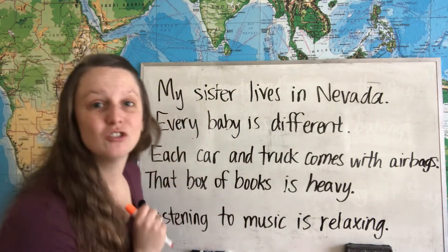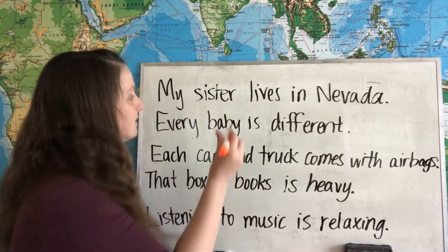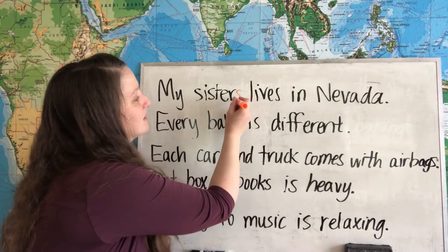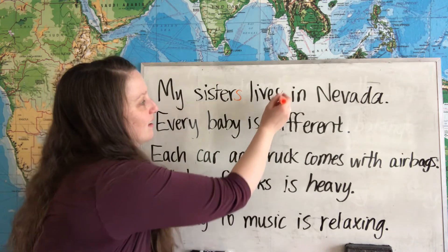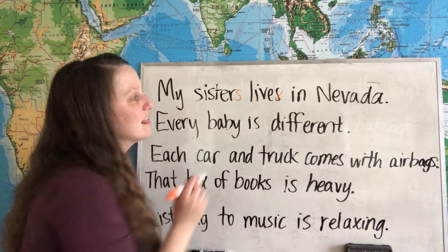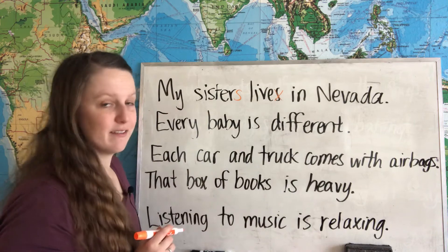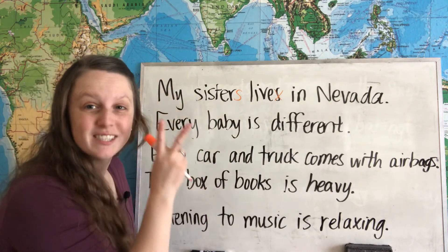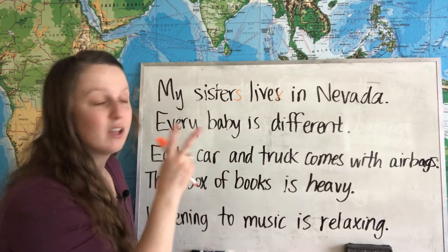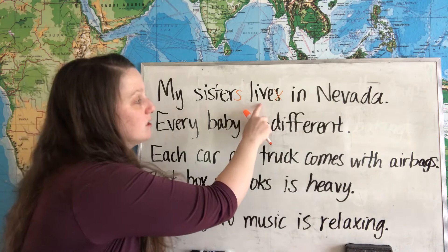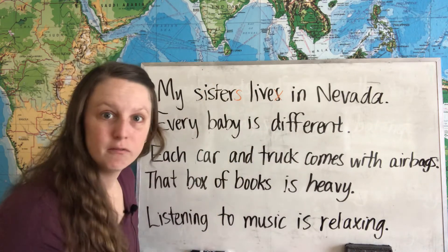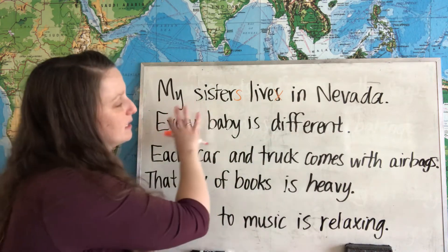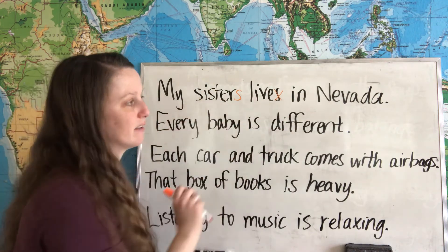Now of course we can change this to show a plural example. Maybe I have two sisters. We can say: my sisters live in Nevada. Because we have two sisters, we change the verb to a plural form. My sisters live in Nevada.